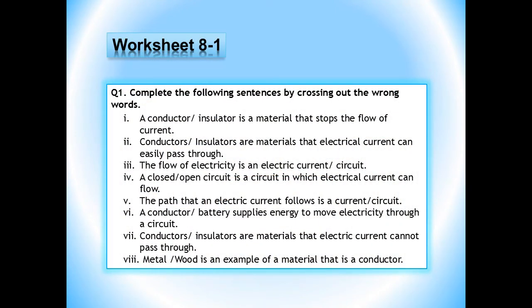Let's do worksheet number 1 of unit number 8 to make your concepts more clear. Question number 1 is: complete the following sentences by crossing out the wrong words. Number 1: a conductor or insulator is a material that stops the flow of current — conductor is the wrong word, so cross it out. Number 2: conductors or insulators are materials that electrical current can easily pass through — insulator is the wrong word, so cross it out.